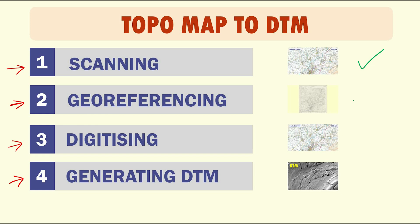To summarize this stage: after you scan your map, you need to georeference and project your data using at least four points — the corners of the map. The more points you use, the better the accuracy you will have in the end. You can add more points using the intersection points of the grid lines.